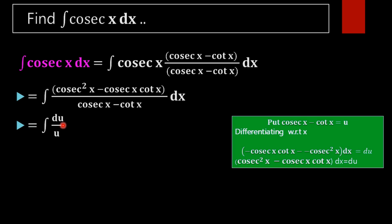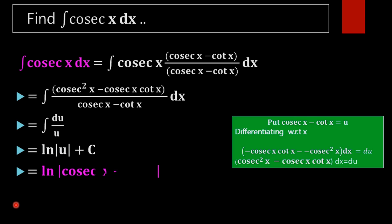The integral of du/u equals log|u| + C. Substituting back u = cosec(x) minus cot(x), the required result is log|cosec(x) minus cot(x)| + C.